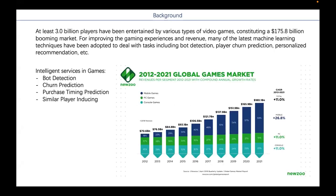I'm going to introduce the background first. The game industry is very prosperous and artificial intelligence is widely used in the game field. For example, bot detection, player churn detection, purchase timing detection, and personalization recommendation.